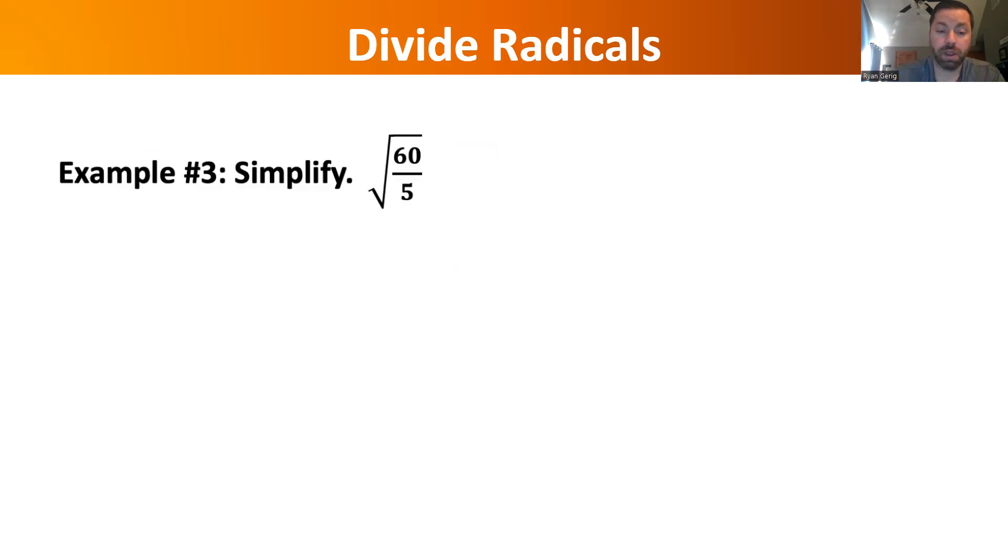How about this one? A cool thing you can do is, that's just a fraction, I can reduce fractions. 60 divided by 5 is 12. I'm just going to reduce it. It didn't take away the radical, I still have to simplify it. The square root of 12, now I can do what I did in Lesson 1, and break 12 into 4 times 3. The square root of 4 times the square root of 3. The square root of 4 is 2, radical 3.